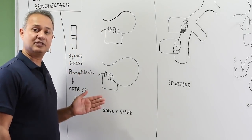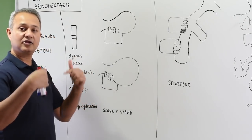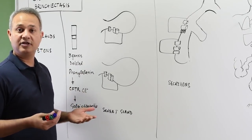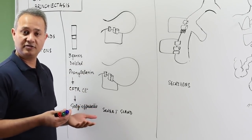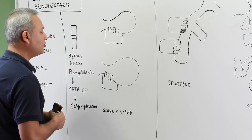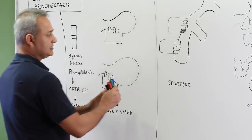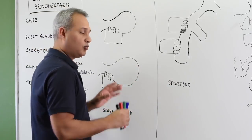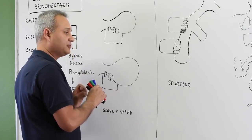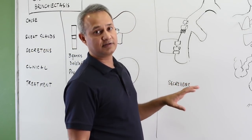When that happens, the secretions of the body become abnormal, and that causes secondary problems that can even lead to death by the age of 30. We are going to look at this disease in two sections: what happens in the sweat glands is a different kind of problem compared to what happens in the rest of the secretory glands of the body.